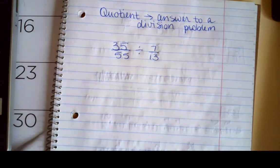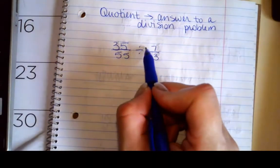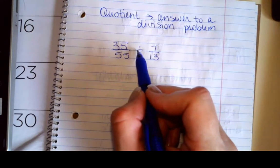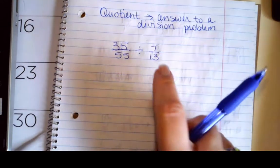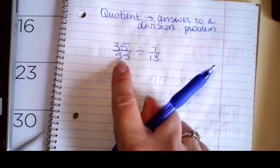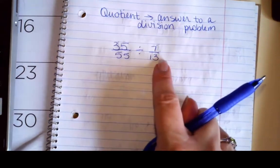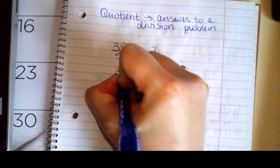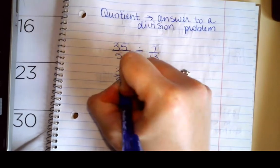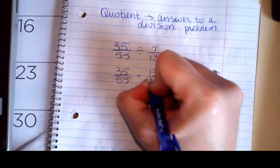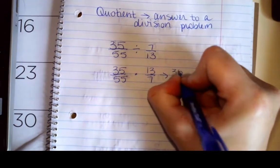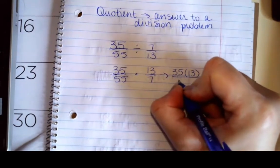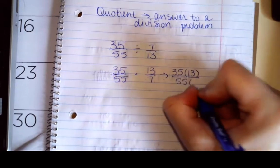So my first step is going to be recognizing as soon as I see division with fractions, I'm going to change two things. I'm going to change this to multiplication and I'm going to flip the second fraction. Do not flip the first fraction, flip the second fraction. So I'm going to change this to 35 over 55 times 13/7. And now I'm back in familiar territory. So I want to see if I can reduce anything. So I'm going to write this as 35, 13, and then 55 and 7.